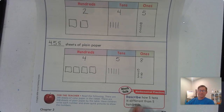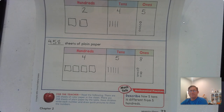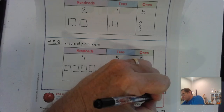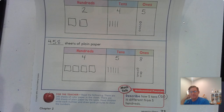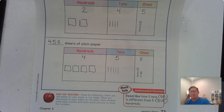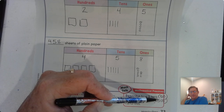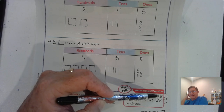Now, let's think about this question: describe how five tens is different from five hundreds. Well, how would you write five tens? Fifty, right? Five tens is fifty. How would you write five hundreds? Five hundreds is five hundred. They're not the same — fifty is much smaller than five hundred. Here the five is in the hundreds place; here it's in the tens place. The number fifty doesn't have any hundreds.